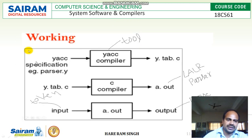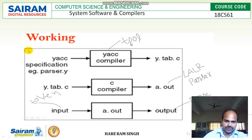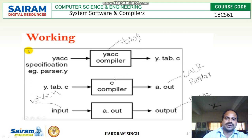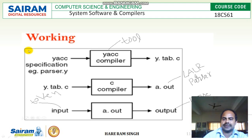Suppose you have written a YACC file with the name parser.y — any YACC file extension should be .y. The YACC tool will compile this file and create a C file called y.tab.c. Since it is a C file, it needs to be compiled using a C compiler, which will generate a.out. This a.out is the LALR parser.